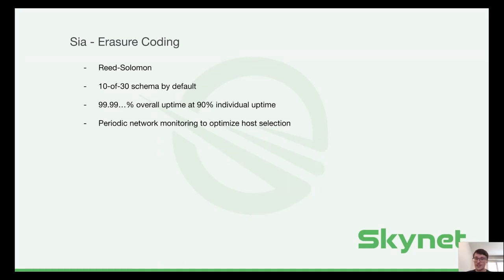That's where erasure coding comes in. We store data redundantly using Reed-Solomon coding. That means that by default, every chunk of data that we upload is split into 30 pieces, of which we only need 10 pieces to actually restore the original chunk. So we can lose up to 20 out of 30 hosts — actually 21 — before we are no longer able to recover the data. Of course SIA does not wait for that to happen. As hosts go offline, we replicate the pieces and upload them to new hosts. That's also what gives SIA a 99.9999% uptime, rivaling centralized services, even though individual hosts may only provide an uptime of about 90%.